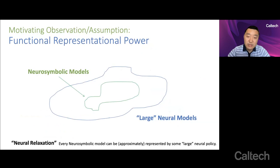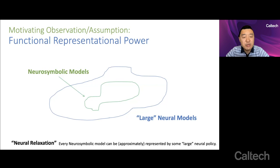And so one of the motivations or motivating observations that we've been using a lot in our algorithm design is the fact that these neural symbolic models in terms of representational power are typically strictly less expressive than large purely neural networks, right? For any input-output behavior that a neural symbolic model can capture, it can also be captured in terms of input-output behavior by a large purely neural network model. We call this a neural relaxation. So every neural symbolic model can be approximately represented by some large neural model.